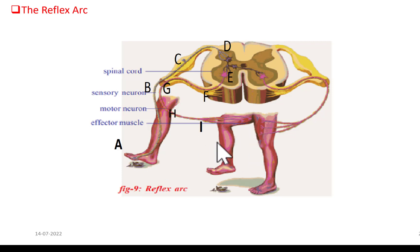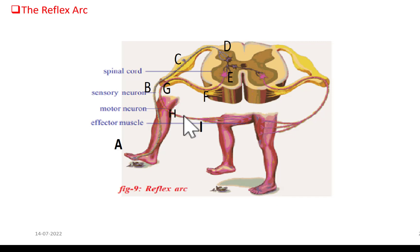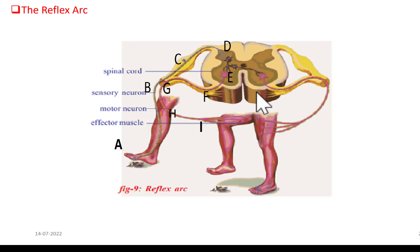For this stimulus, two movements occurred as responses: the first leg raises up, and the left leg presses against the ground to balance the body. This total pathway is completed within the spinal cord. Such short pathways which occur within the spinal cord are called reflex arcs. It is shown in the picture as pathway A-B-C-D-E-F-G-H-I.